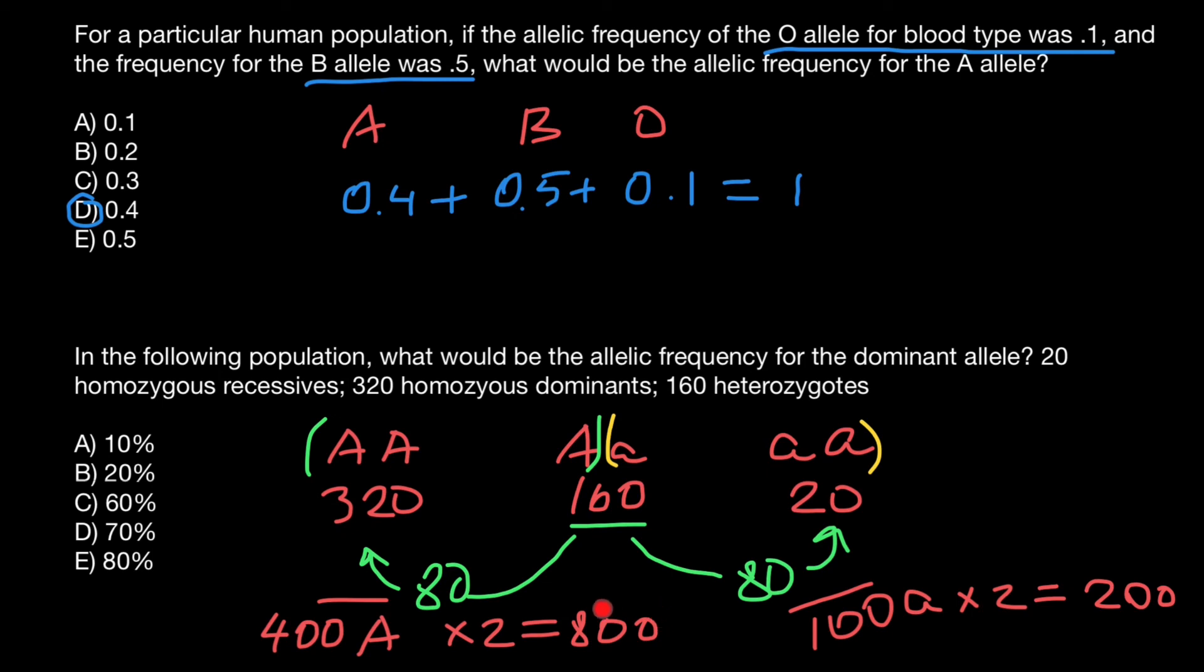Now it is clear that the frequency of the dominant allele is 80% and frequency of the recessive allele is 20%. And the question is about frequency of the dominant allele. So the correct answer is answer E.